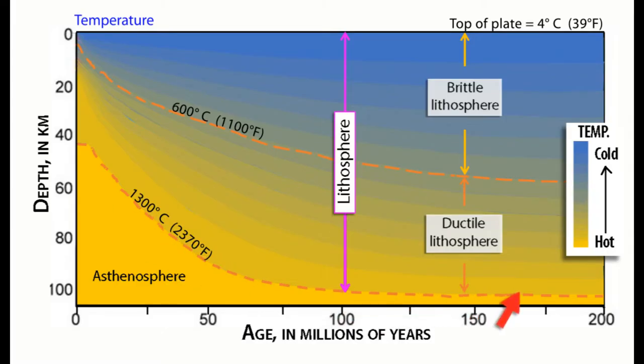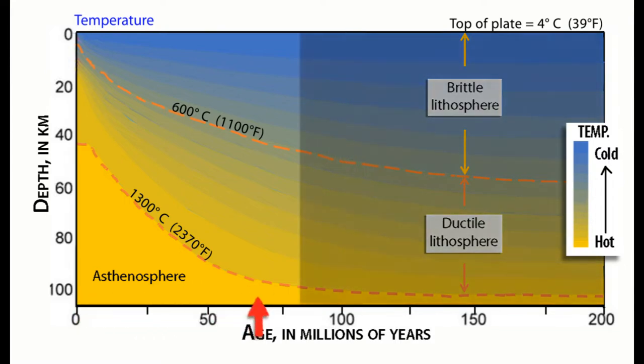Notice that most of the cooling process occurs between age zero at the ridge and about 80 million years when the ocean plate has grown to about 100 kilometers thick.